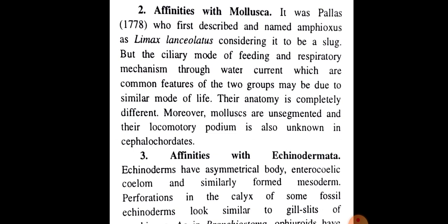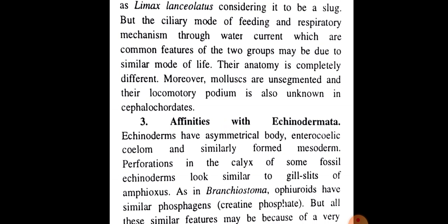3. Affinities with Echinodermata. Echinoderms have asymmetrical body, enterocoelic coelom, and similarly formed mesoderm. Perforations in the calyx of some fossil Echinoderms look similar to gill slits of Amphioxus.